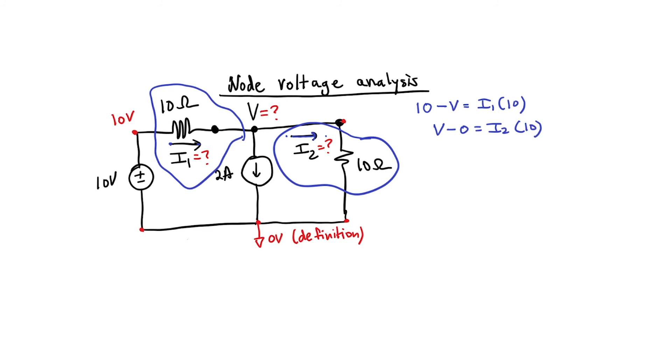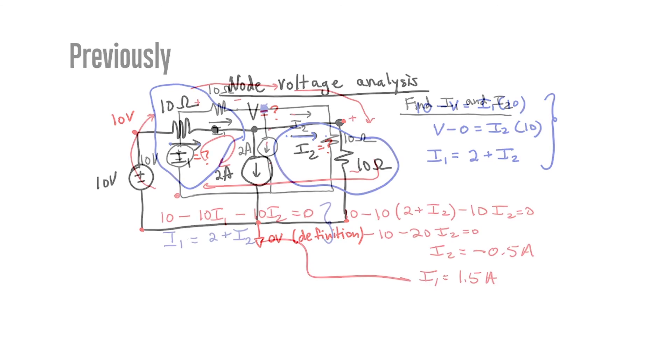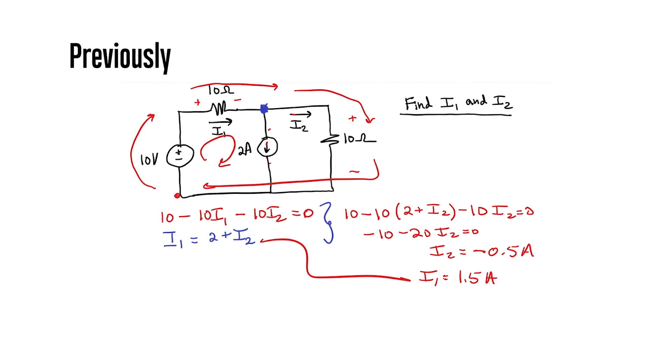I have two equations but I have three unknowns. So I still need to use the Kirchhoff current law in order to get my third equation. So current in to my voltage node is I1 and current out is 2 plus I2. So I now have three different equations and the answers for current I1 and I2 will be the same as they were with the Kirchhoff voltage law that we applied in the previous problem.